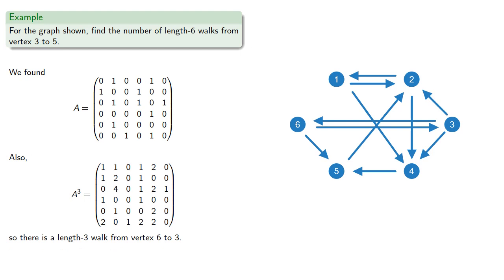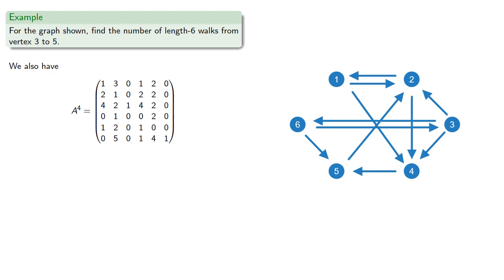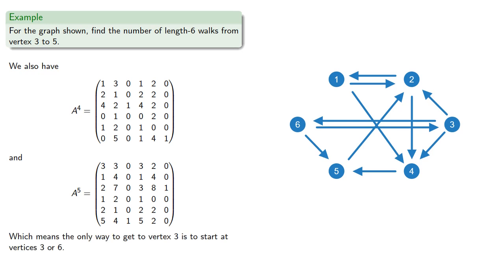If we look at A cubed, there is a length 3 walk from vertex 6 to vertex 3. We also find A to the 4th and A to the 5th, which means the only way we can get to vertex 3 is to start at vertex 3 or 6.